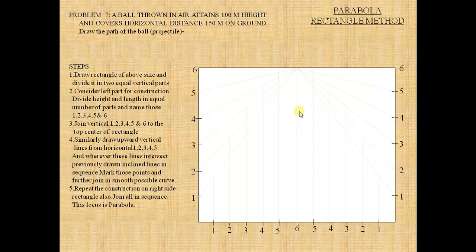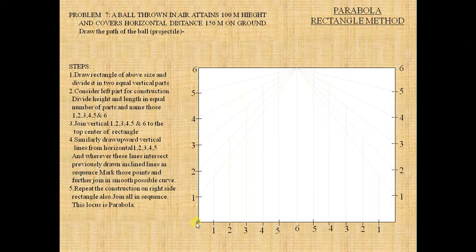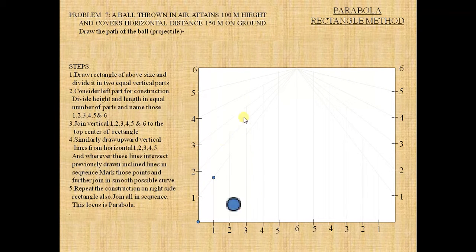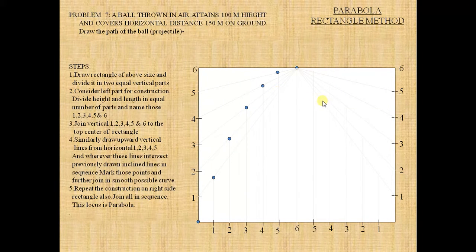And the same procedure on the right side. Now, point out the intersection points. Now, here is the point and here is the one-one intersection, two-two intersection, three-three intersection, four-four, five-five, six-six, respectively. And same as on the right side.